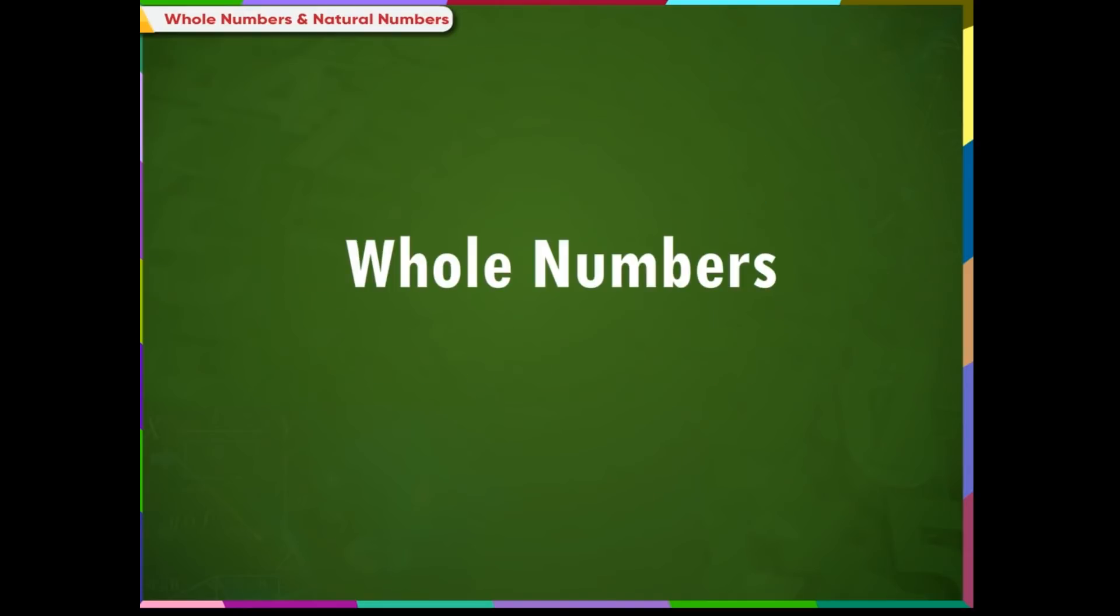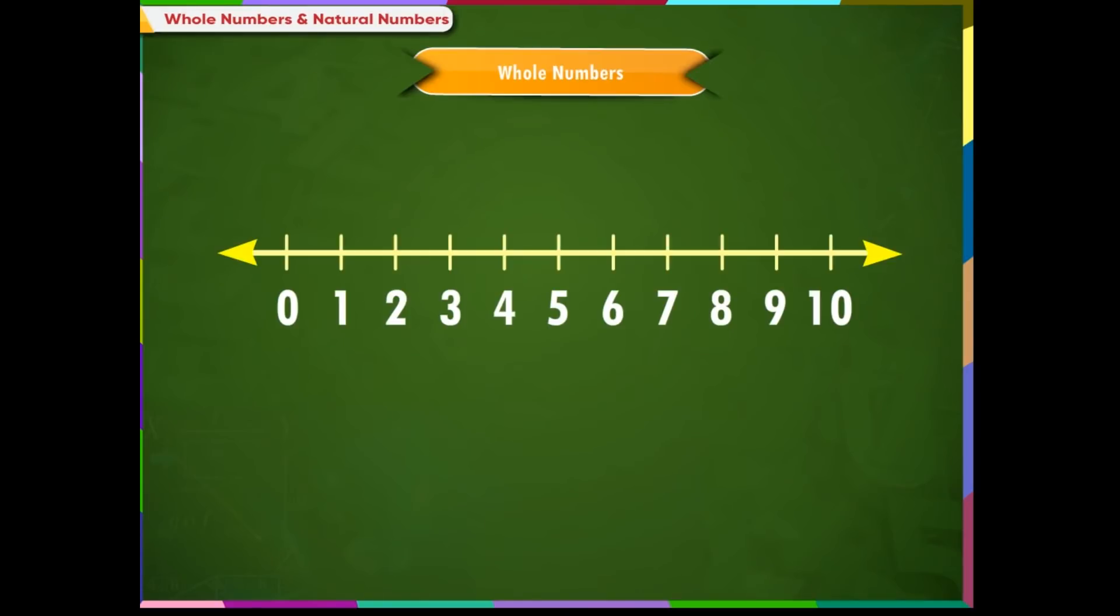Now, let us study about whole numbers. This is a number line showing numbers from 0 to 10. Zero is not a counting number. Whereas, the numbers 1, 2, 3, 4, 5, 6 and so on are counting numbers or natural numbers.